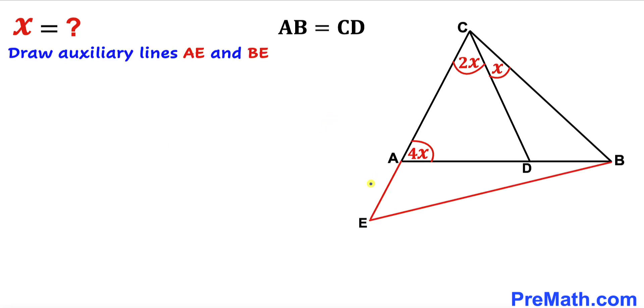We're going to draw two auxiliary lines AE and BE such that angle AEB is 3X.